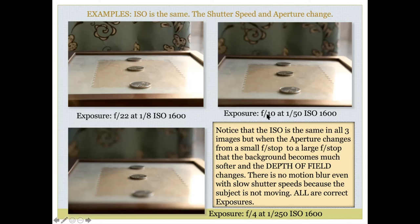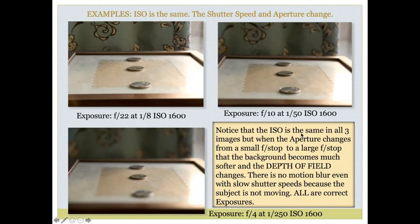Now I want shallower depth of field, so I could change to f/10 — but f/10 opens up and lets in more light, so if I kept the other settings the same my picture would be too bright. I have to change my shutter speed as well. I move to f/10, pay attention to my light meter, and the light meter hits the middle at 1/50s. For even shallower depth of field, I open to f/4, and the light meter hits the middle at 1/250s. Notice the ISO is the same in all three images.